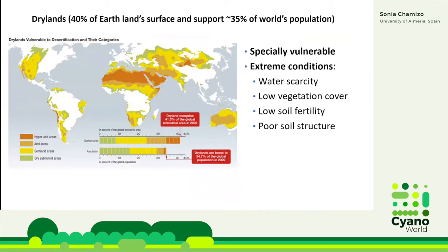Drylands represent around 40% of the earth's land surface. And it's predicted that by 2050, they will represent more than 45% of the land surface. These areas support around 35% of the world's population. But these areas are especially vulnerable because of the extreme conditions that characterize them, such as water scarcity, low vegetation cover, low soil fertility, and poor soil structure.